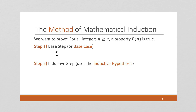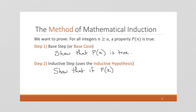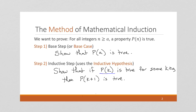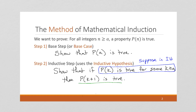Just a refresher: we want to show in the base case that the property we're trying to prove is true for the first index in the sequence. In our inductive step, we want to show that if the property is true for some K in our sequence, then the property will be true for K plus 1. We're going to use a direct proof and suppose this in the induction hypothesis, then demonstrate or show this.